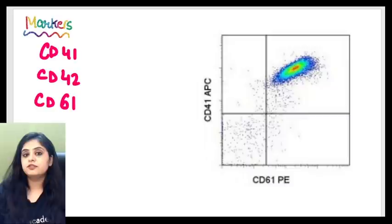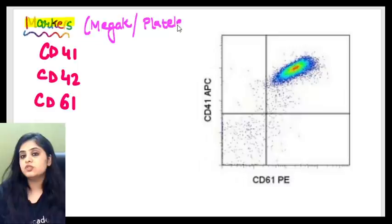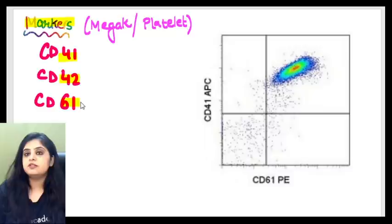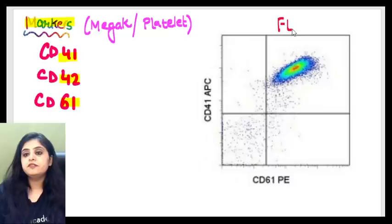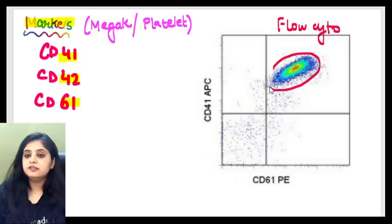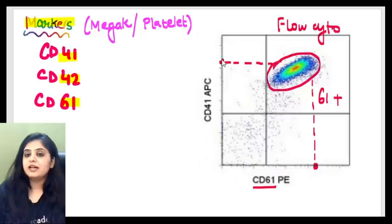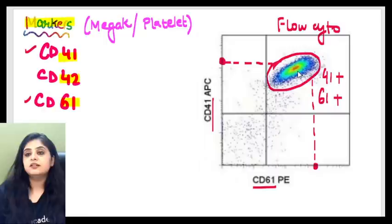The markers of a megakaryocyte are CD41, CD42, and CD61 — the same markers apply to mature platelets. Looking at the flow cytometry shown here, all the cells lie in the quadrant that is positive for CD61 on the x-axis and positive for CD41 on the y-axis. Both 41 and 61 are positive — these are normal megakaryocytes or platelets.